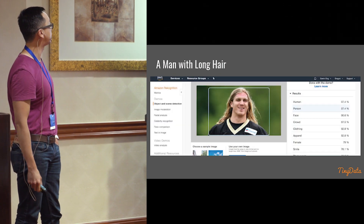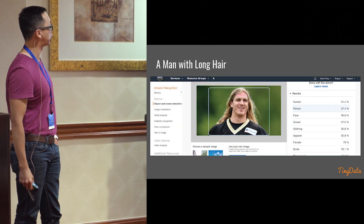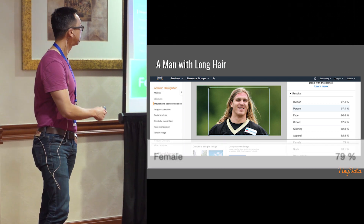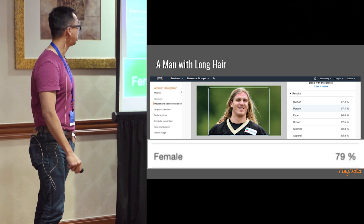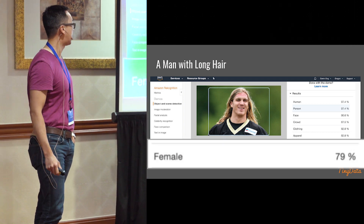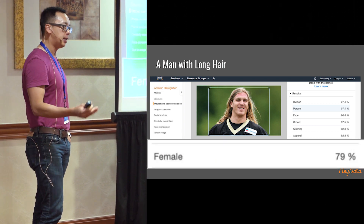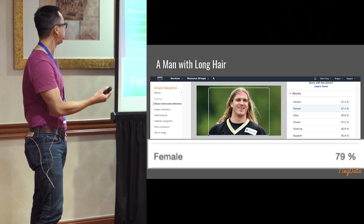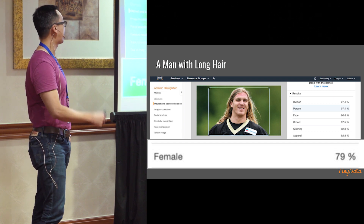Here we have a picture of Alex Anzalone, who is a 6'3", 240-pound NFL linebacker. We're interested in what the systems think he is. Using Amazon's Rekognition system, the facial analysis says there's a 79% chance he should be classified as female.